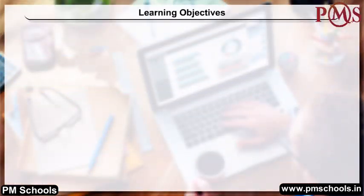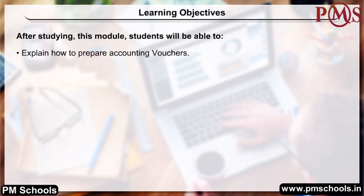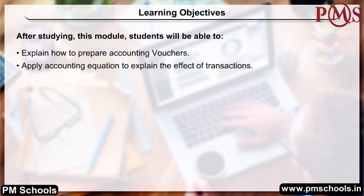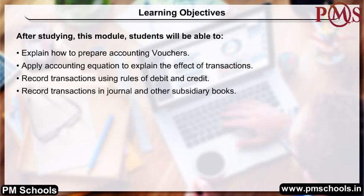Learning Objectives: After studying this module, students will be able to explain how to prepare accounting vouchers, apply the accounting equation to explain the effect of transactions, record transactions using rules of debit and credit, and record transactions in journal and other subsidiary books.